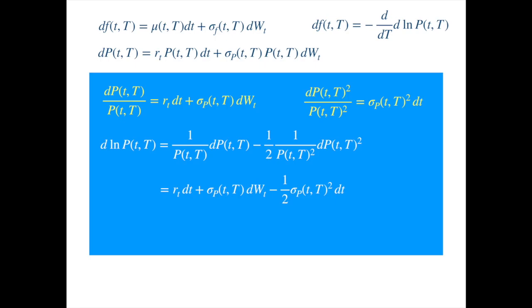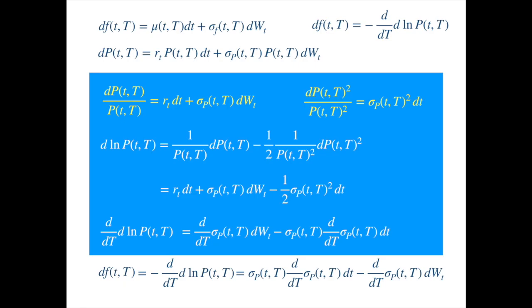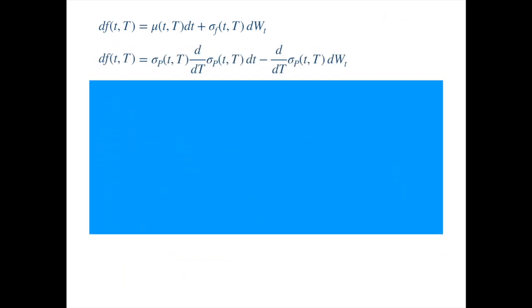Now we need to take the derivative of this with respect to capital T, where the derivative of sigma squared equals 2 sigma, so the two's cancel. The differential of the forward is equal to the negative of this, so we change the signs of the two terms and rearrange, and now we have the dynamics of the instantaneous forward under the risk neutral measure. Both differentials represent the dynamics of the same instantaneous forward, so the volatility terms must be equal and the drift terms must be equal.